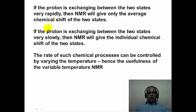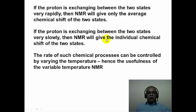If the proton exchanges between two states very slowly in the NMR timescale, NMR will give the individual chemical shift values of each state — for cyclohexane, two signals: one for axial and one for equatorial. In between, where the rate is neither too fast nor too slow, large uncertainty sets in, resulting in broadening of the NMR signal. What makes variable temperature NMR special is that chemical rate processes can be controlled by temperature, hence the usefulness of this technique.